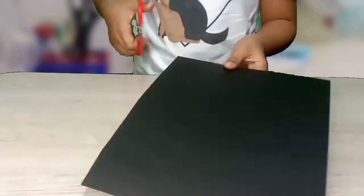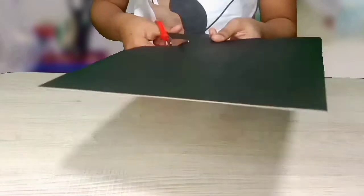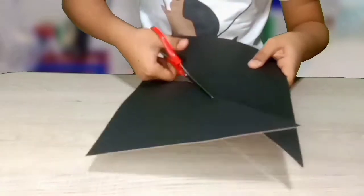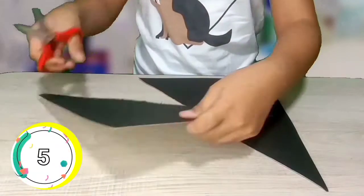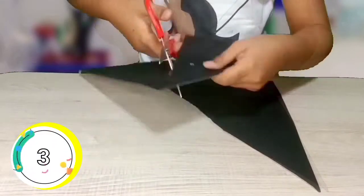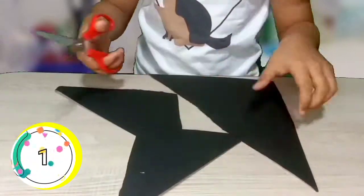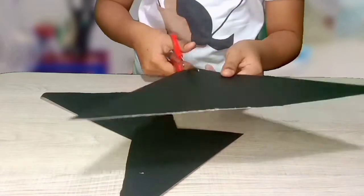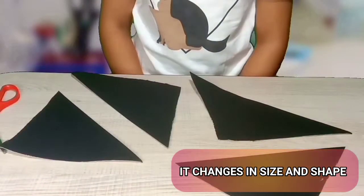Our second material is a piece of cardboard. Observe what will happen to a piece of cardboard when it is cut. It changes in size and shape.